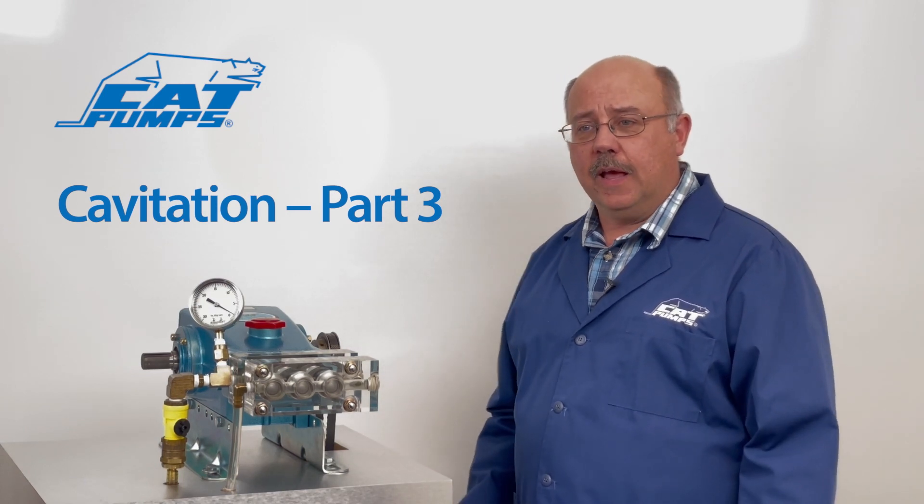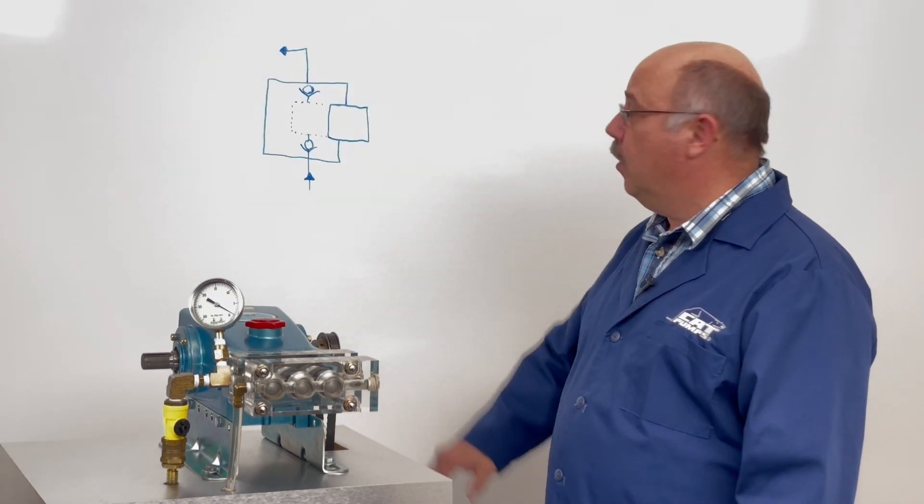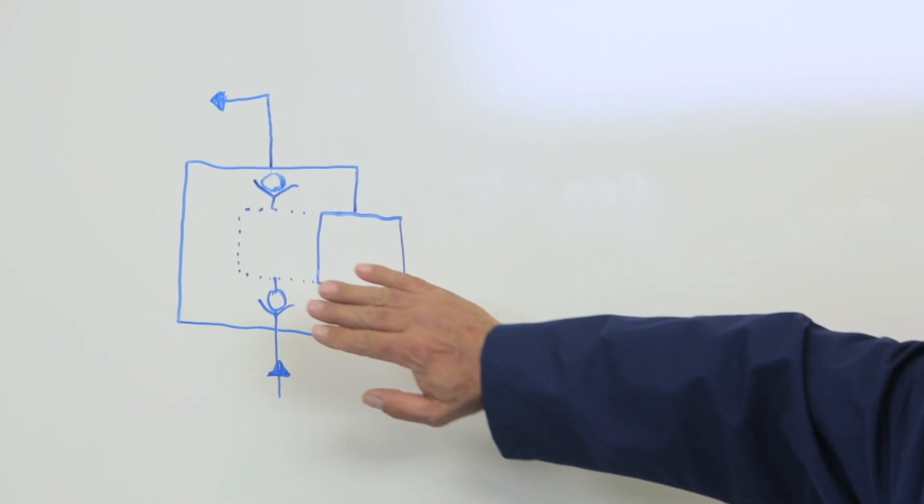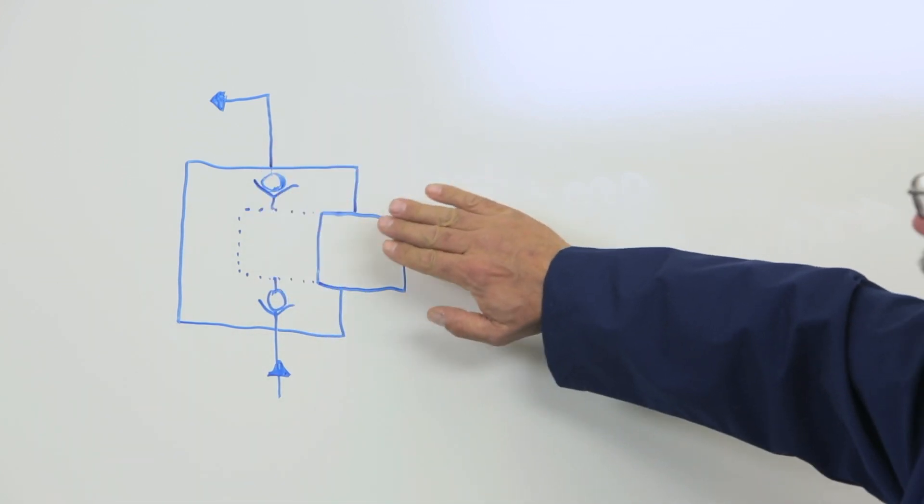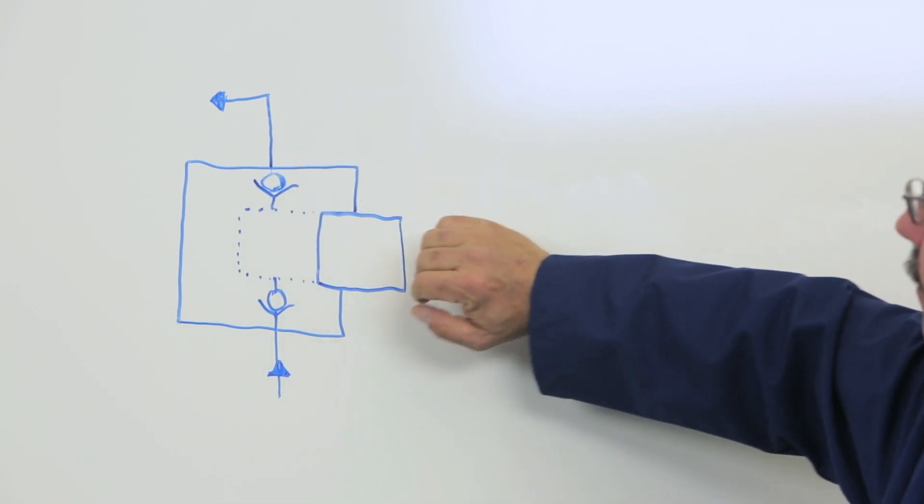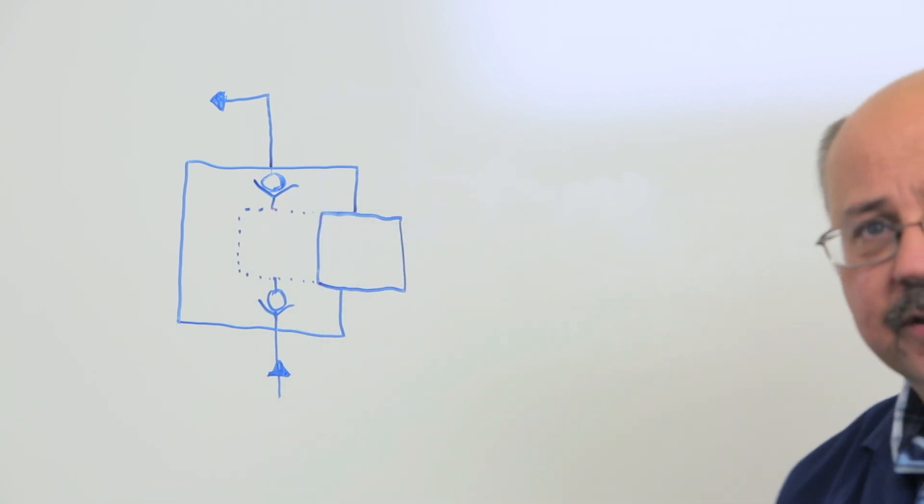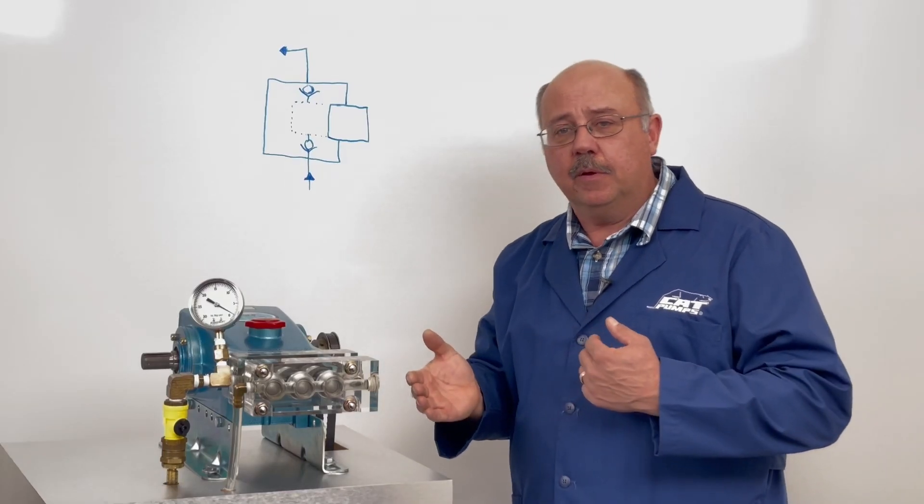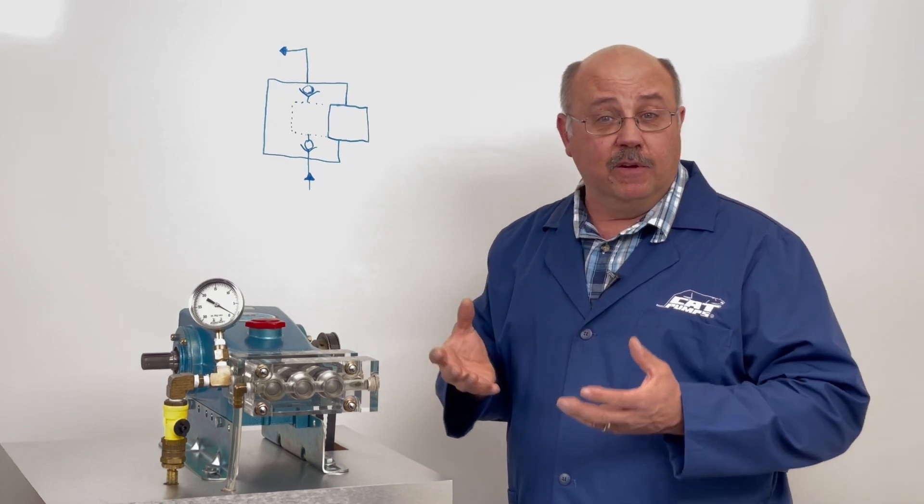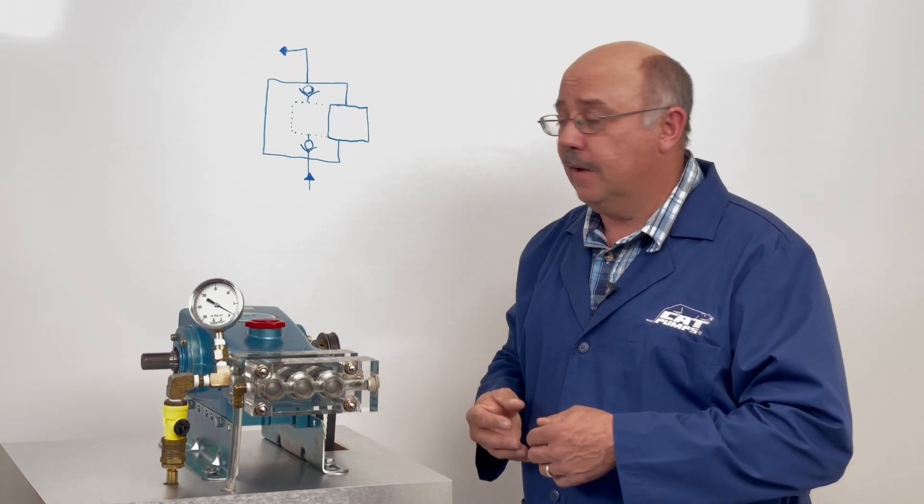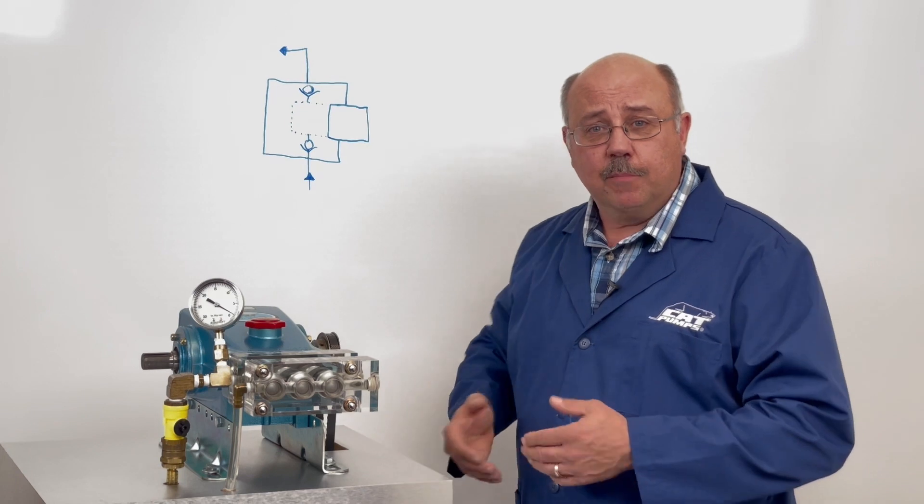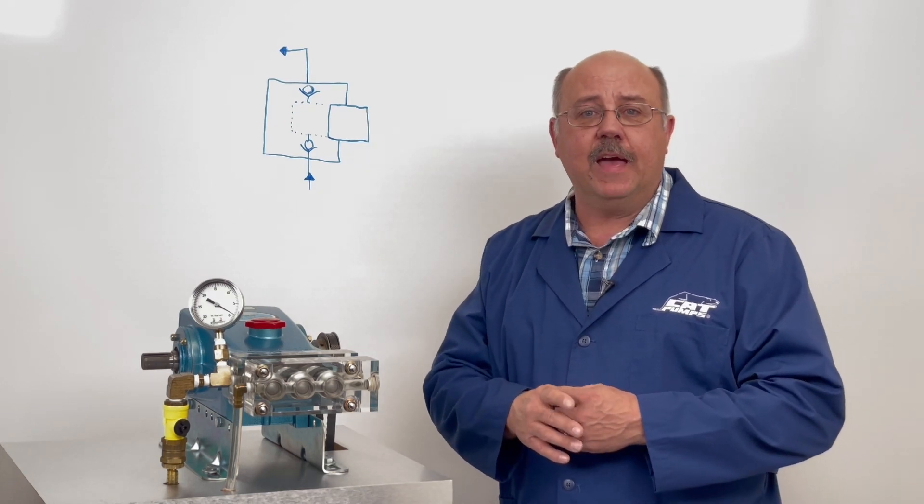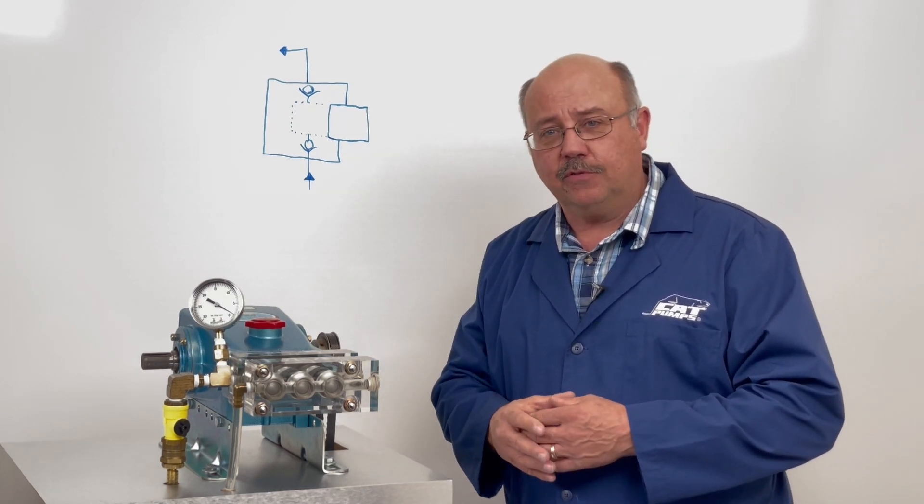So what we're going to look at is, as we did in part one, we had a pumping chamber that we'd drawn on the whiteboard, and it had a plunger, inlet valve, discharge valve, and it showed as the plunger went back and forth, that on the reverse direction, it had to fill that pumping chamber with water, and if we couldn't fill the chamber, it would turn a little bit of that liquid into a gas phase.